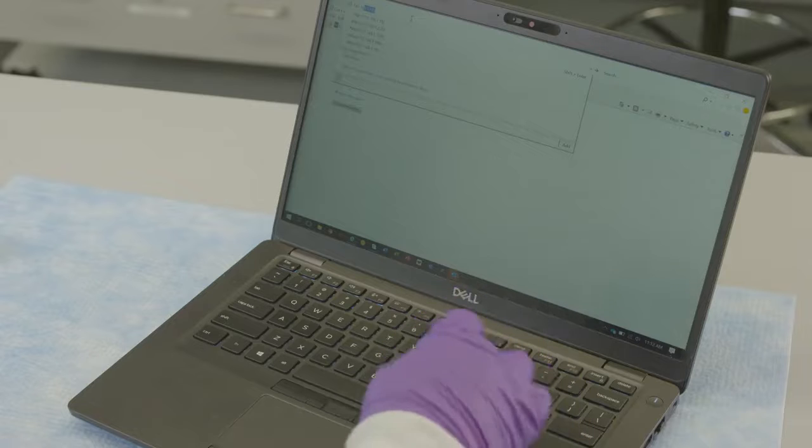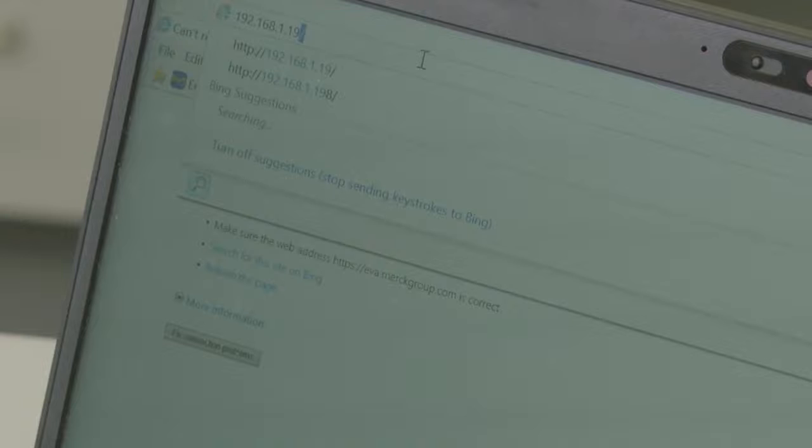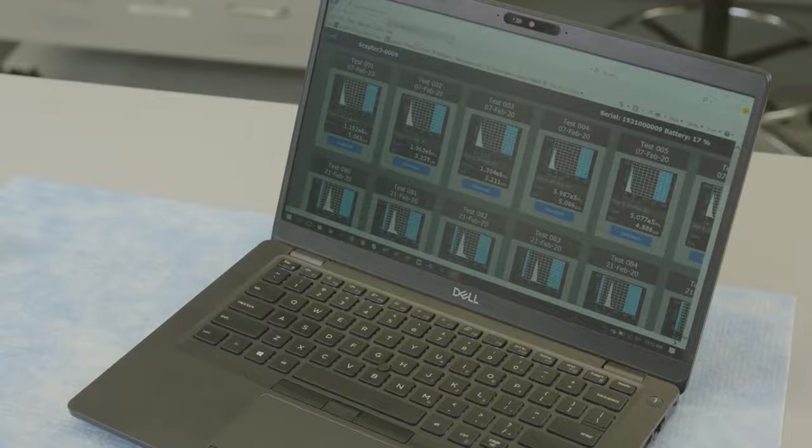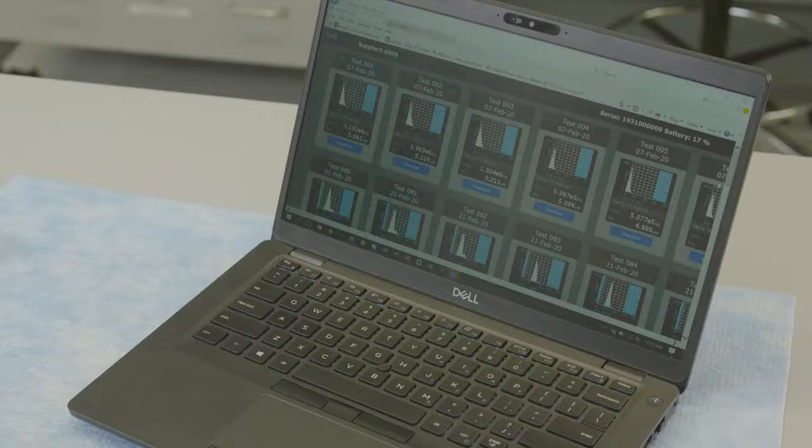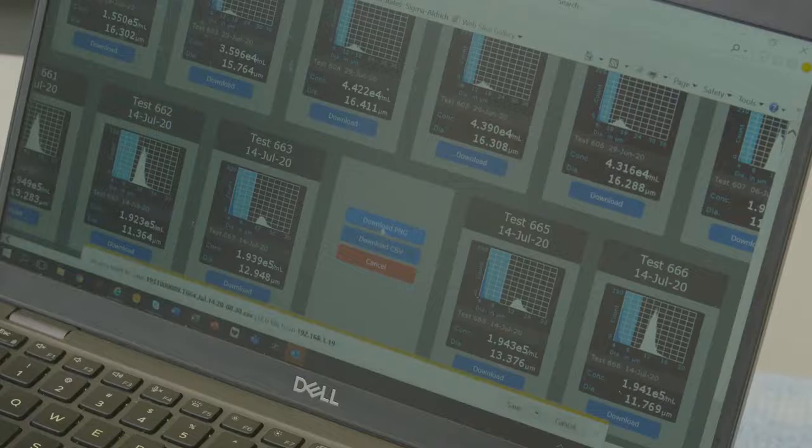From the computer, open the internet browser and type the SEPTOR 3.0 IP address in the address bar and press enter. The current data on the SEPTOR 3.0 instrument will be displayed. Scroll to desired histogram, click to download CSV data and PNG image files to the computer.